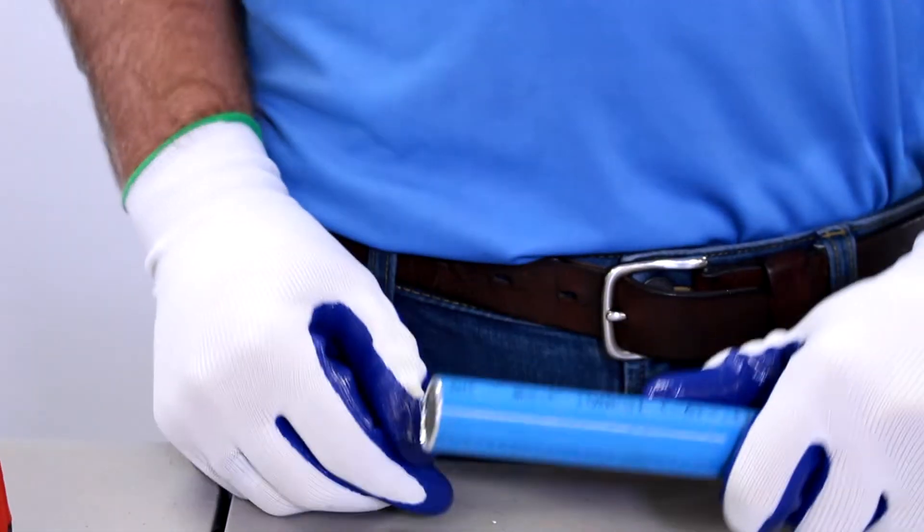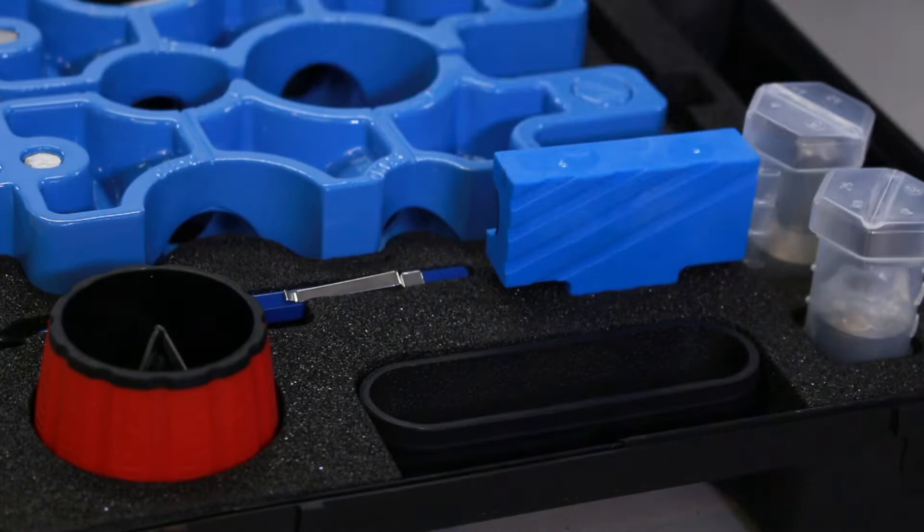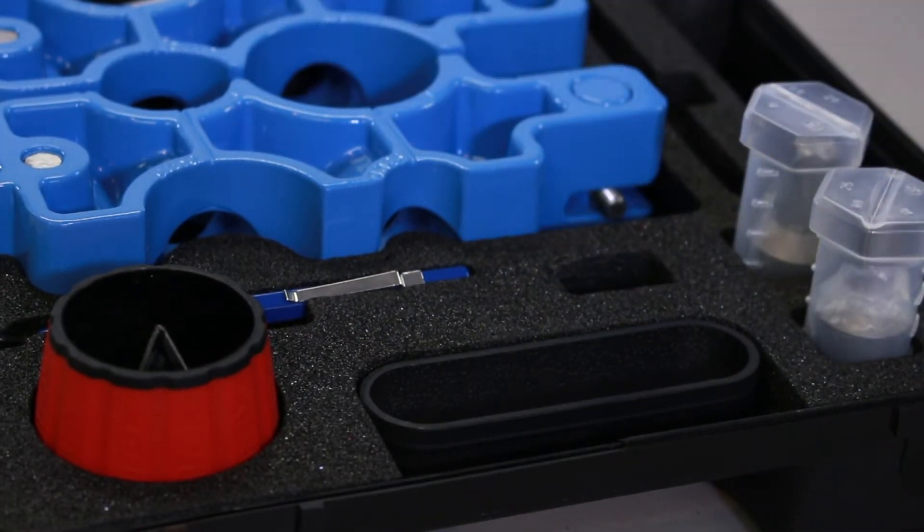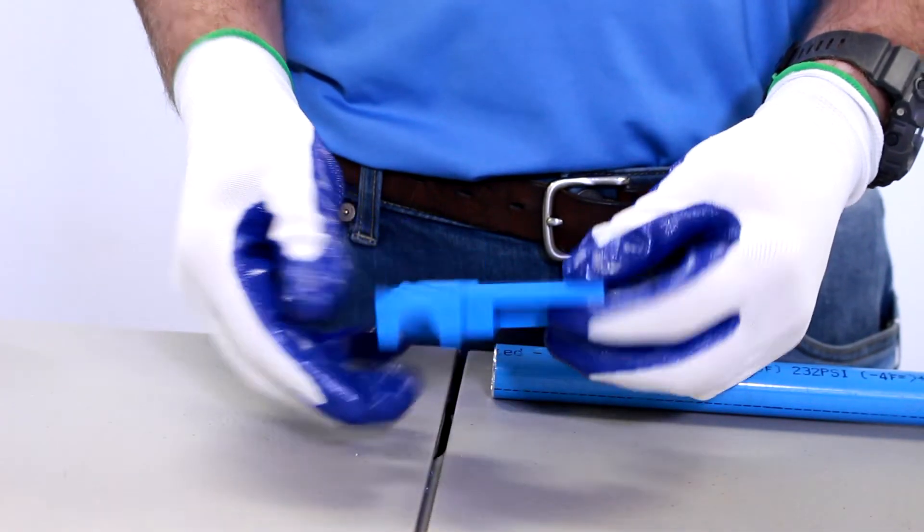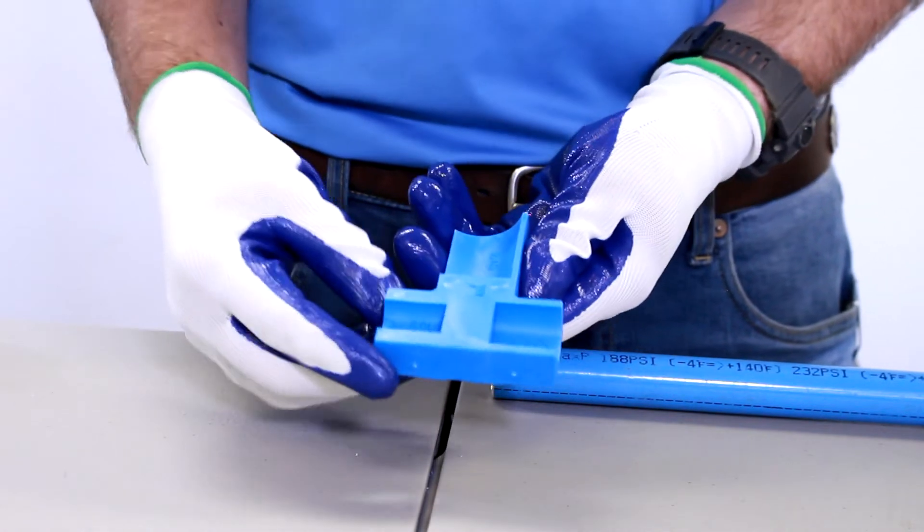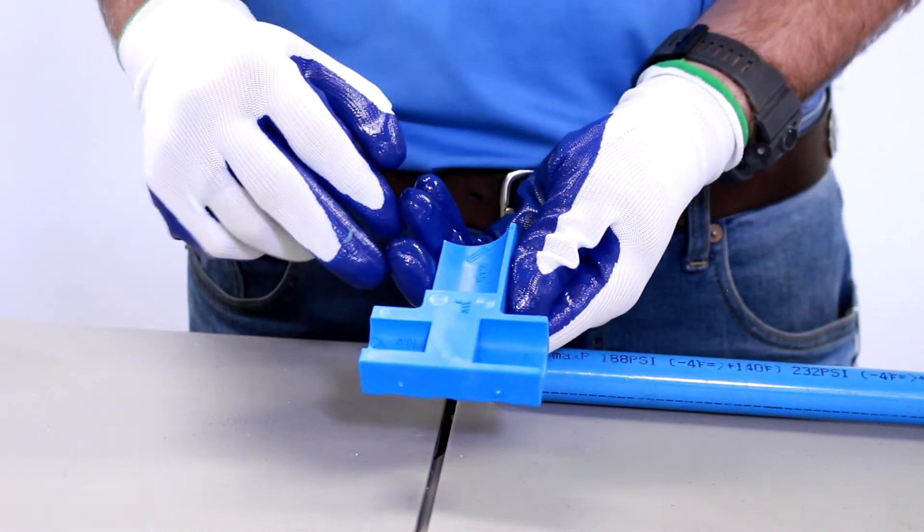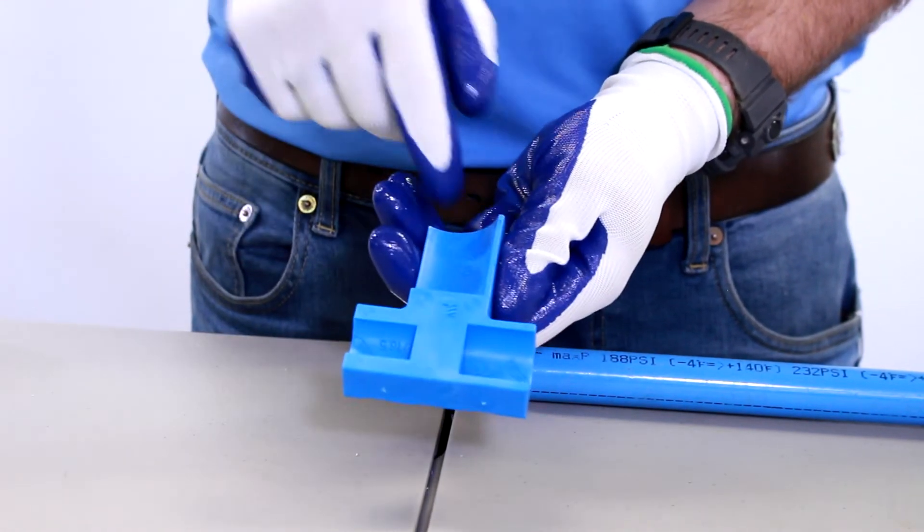All right, so once we've deburred our pipe, our next step is to mark our depth of insertion. We're going to use this little tool here that is provided in the toolkit. We're going to flip it to our one inch side. So this will work with half inch, one inch, and inch and a half.